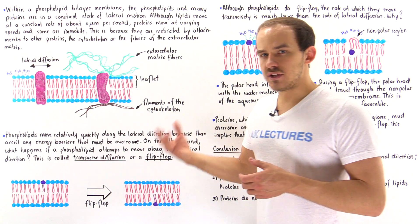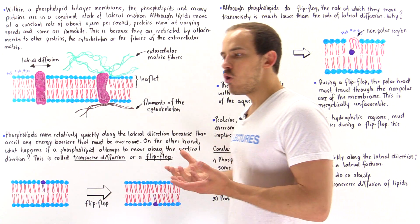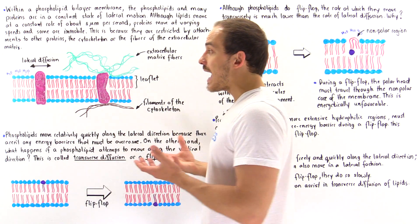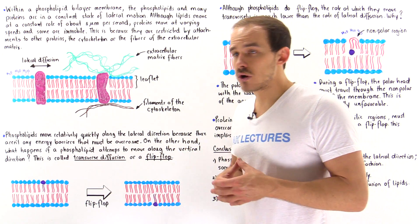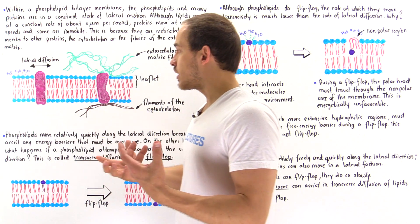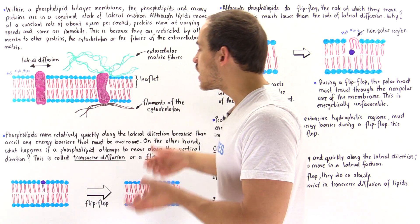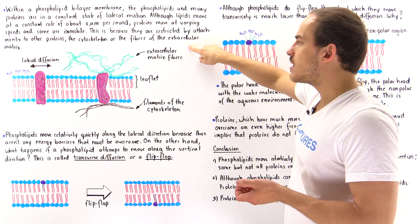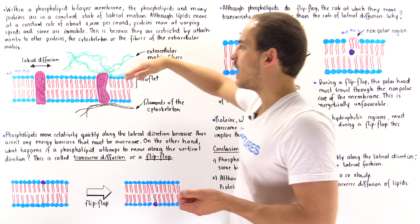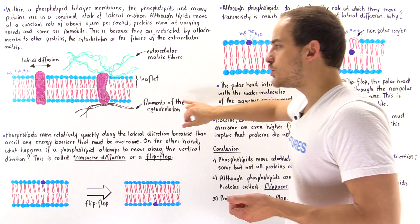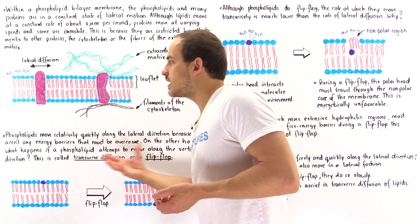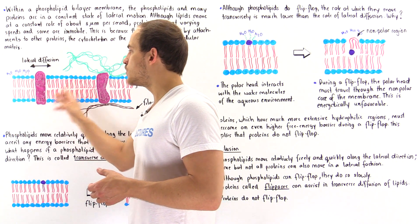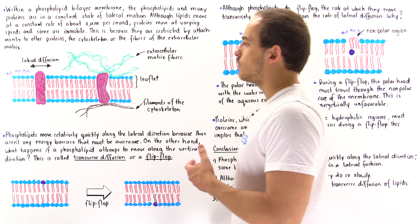Some proteins move relatively quickly while other proteins are essentially immobile. That's because some proteins aren't actually physically attached onto any other molecule or structure. But other transmembrane proteins, or integral proteins, are attached onto physical structures — for instance, onto the collagen fibers of the extracellular matrix found outside the cell, and also onto the filaments of the cytoskeleton found in the cytoplasm inside the cell. So one protein will be relatively mobile while the other will be unable to move freely along the lateral direction.